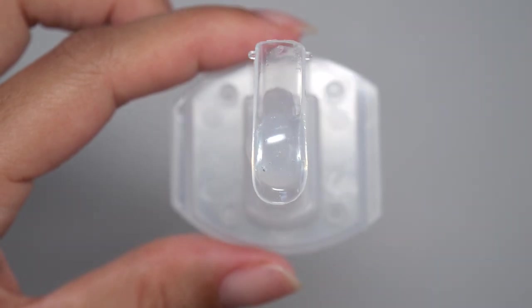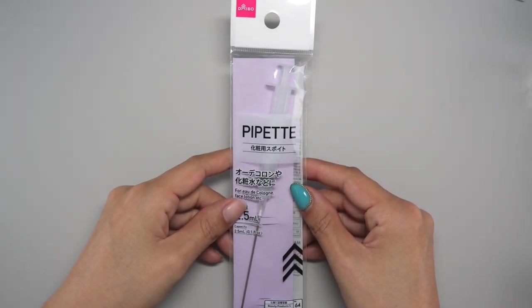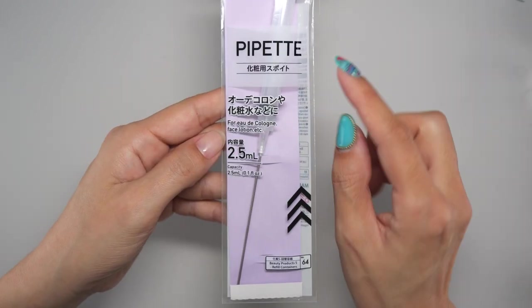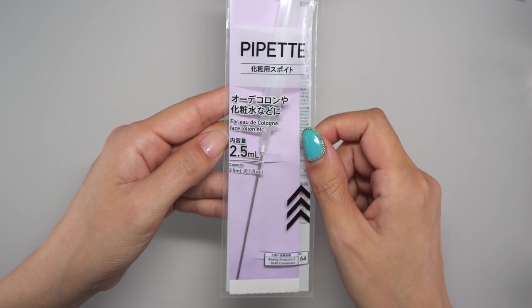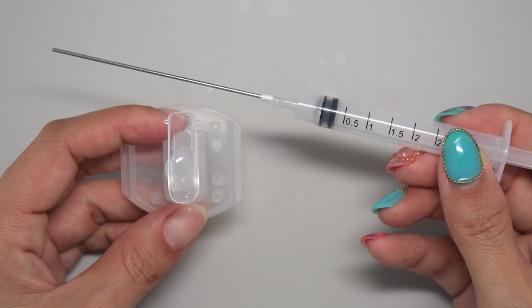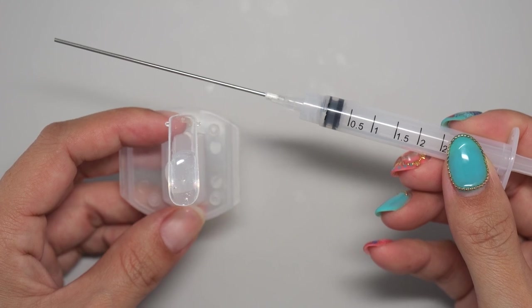Next, let's create large bubbles. Here's what I use, a syringe sold at a dollar shop. This is a syringe used to refill lotion, perfume, etc. Don't worry, it is not for medical use. This syringe is used to inject air into the heart gel.